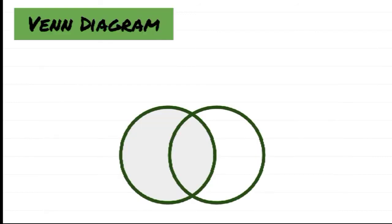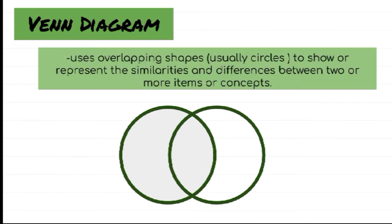Another one is the Venn diagram. It uses overlapping shapes, usually circles, to show or represent the similarities and differences between two or more items or concepts. So those were some examples of non-linear text.